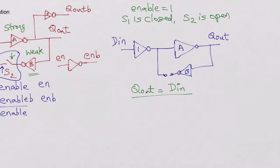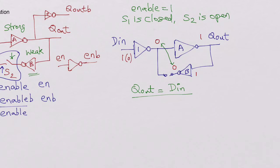When enable is high, the latch passes the D input on to Q out. For example, if DN is high, the output of inverter 1 is low and the output of inverter A is high. That high goes to the input of inverter B, making its output low. On both sides of switch S2 we have the same state — zero on both sides. Similarly when DN is 0, Q out is 0 and the states on both sides of S2 remain consistent.